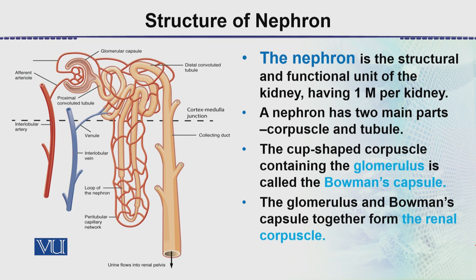The nephron has two main parts: a capsule and a tubule. This cup-shaped structure is a slightly dilated portion that contains a tuft of capillaries which forms the glomerulus.